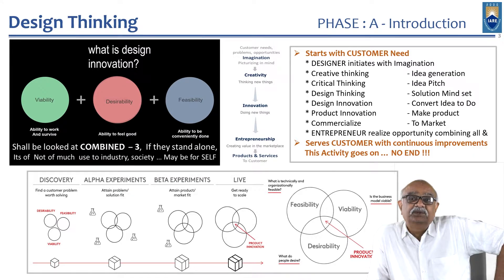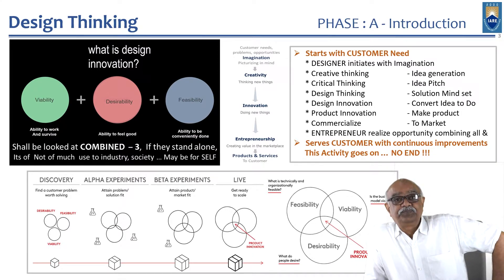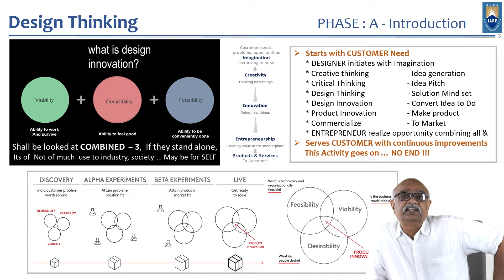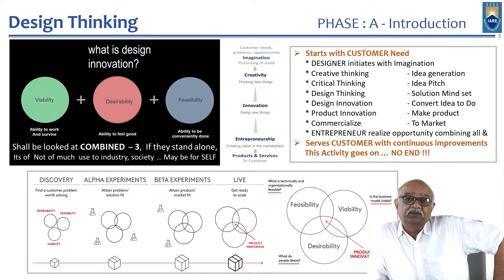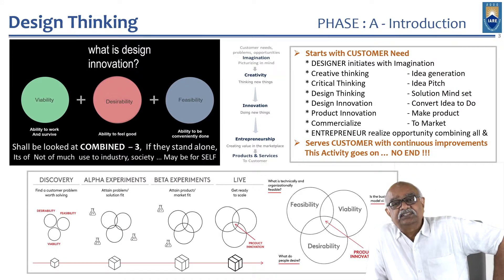That is: ability to conveniently do, ability to feel good, and ability to work and survive — that is viability, desirability, and feasibility. When you look at these three, if they are just standing alone, they have no purpose. They are individualistic and have to be combined. If two are combined also, they will not serve the purpose. All three have to be combined — at least these three — that is where they will start giving solutions to the society.